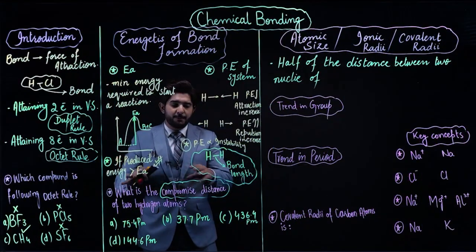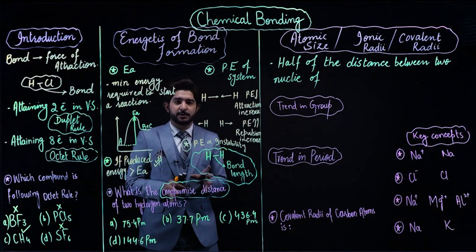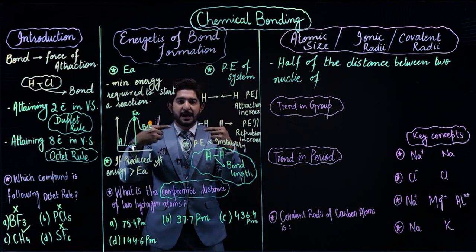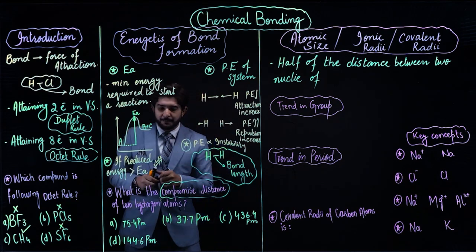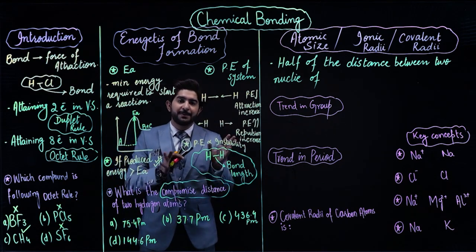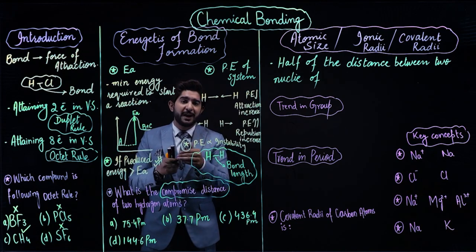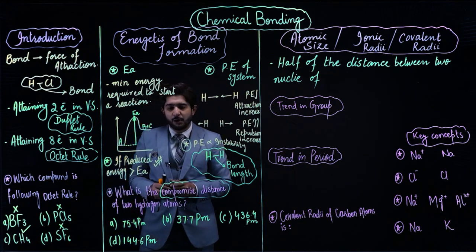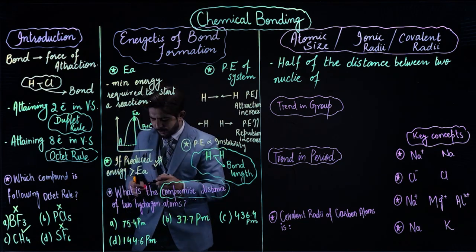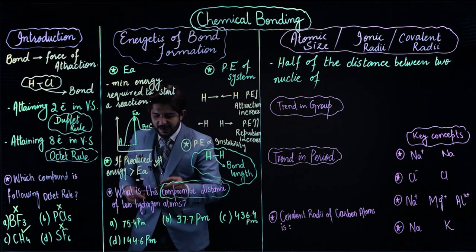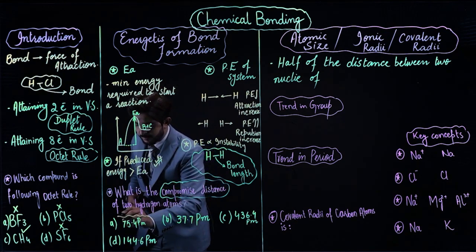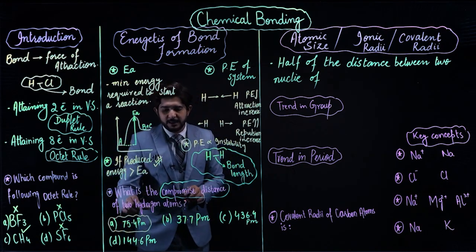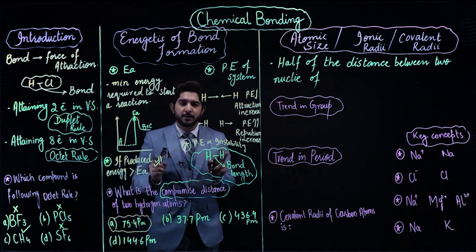What is the compromise distance of two hydrogen atoms — the bond length of the hydrogen molecule? This is a memory-based question important for MDCAT. The compromise distance of two hydrogen atoms is 74.5 picometers. This is the compromise distance of two hydrogen atoms.